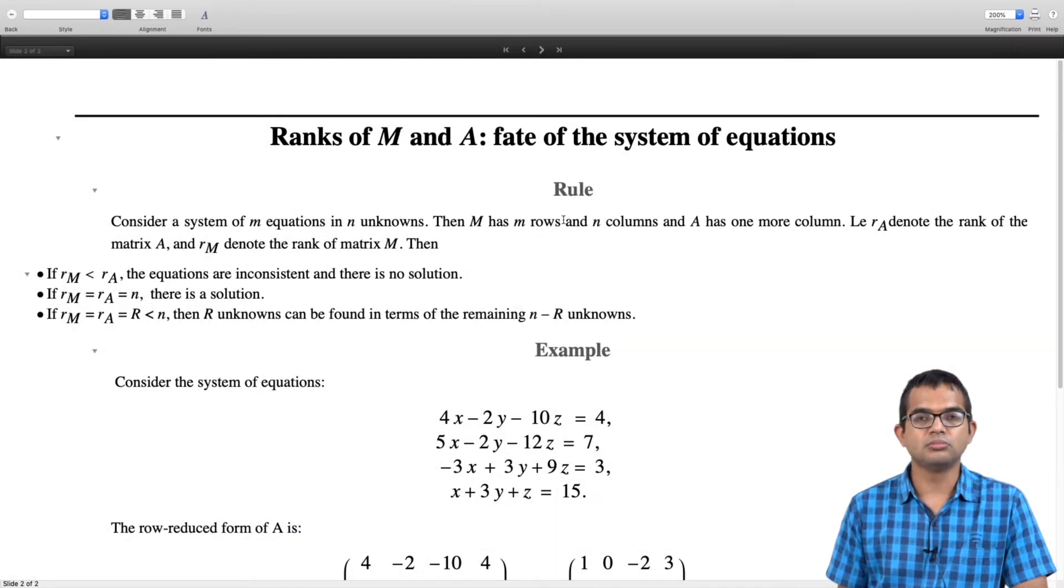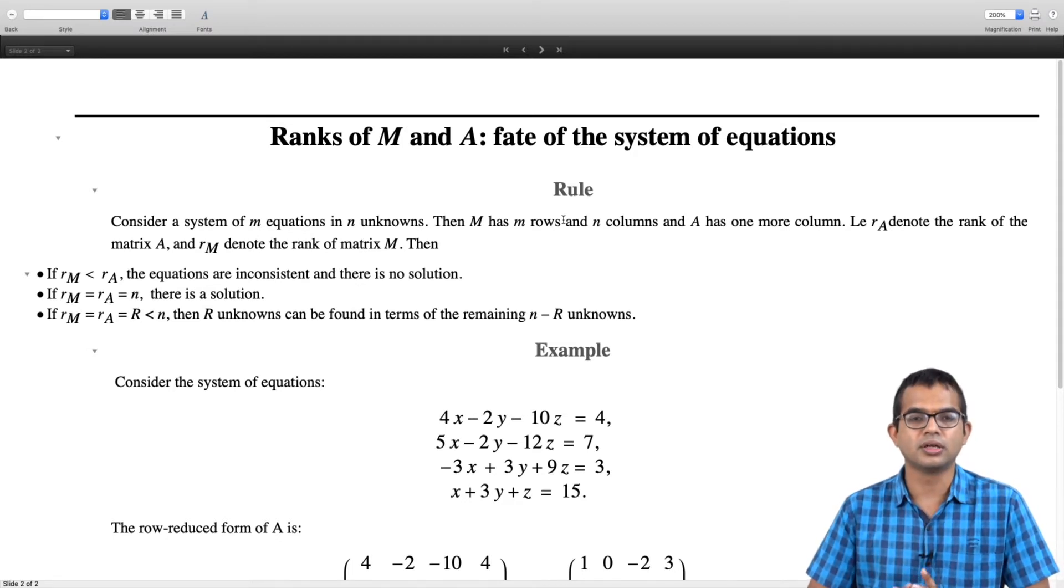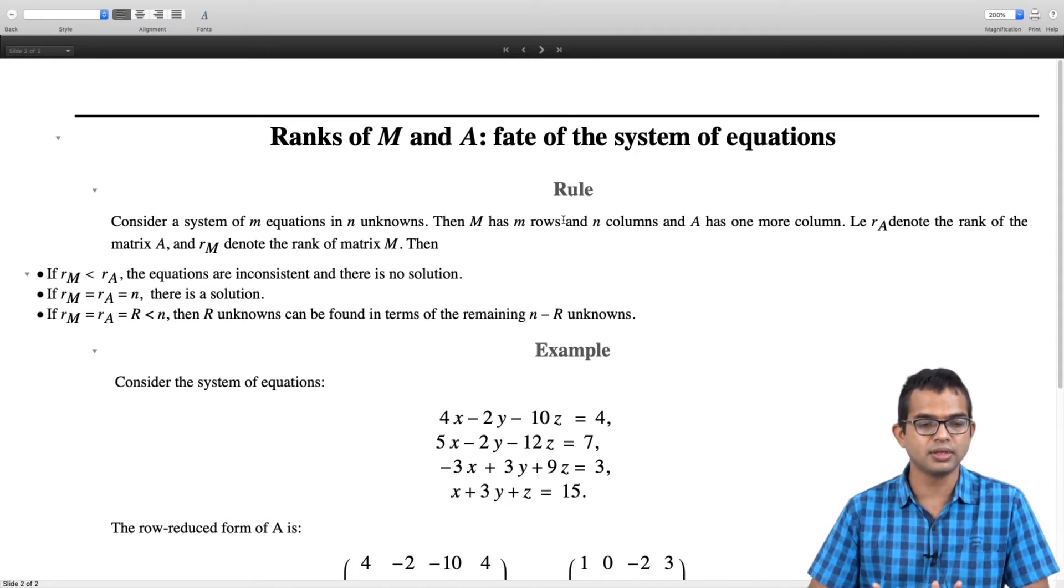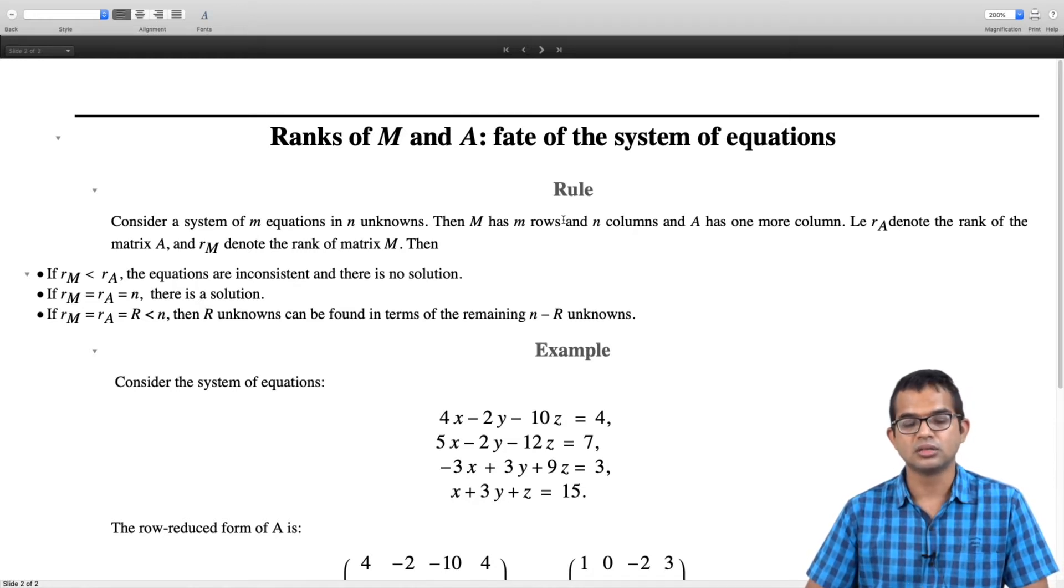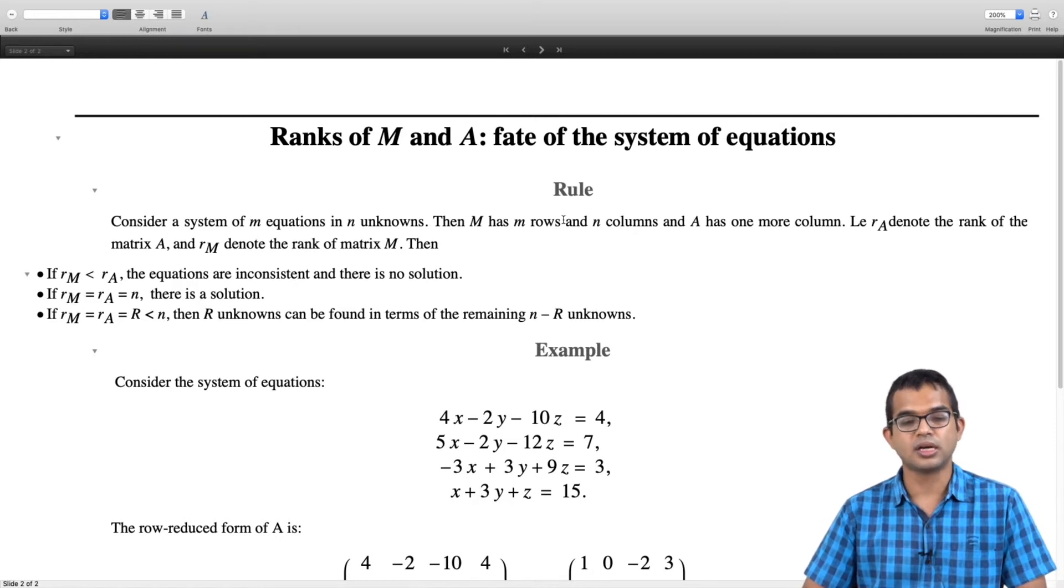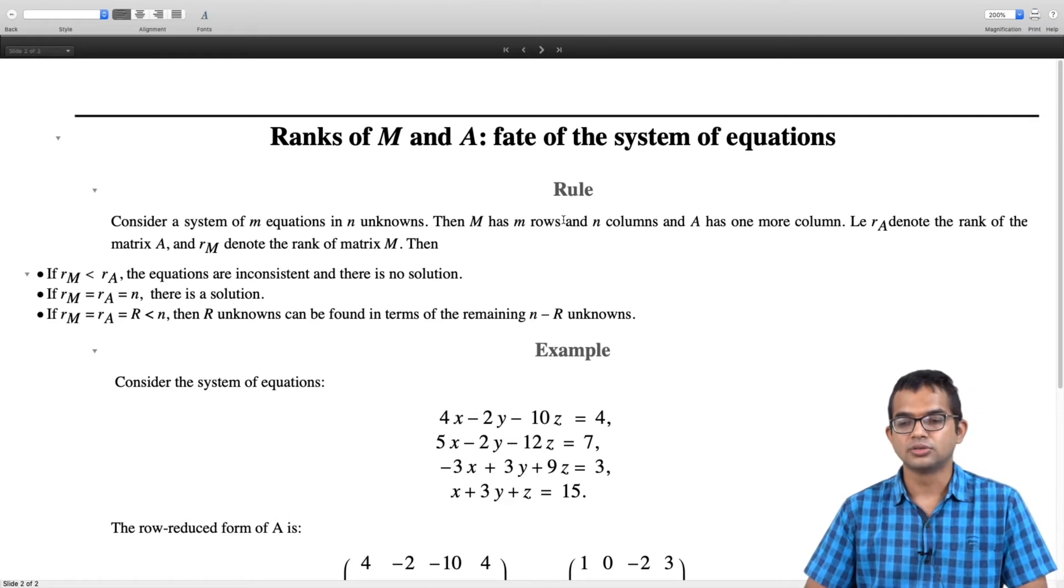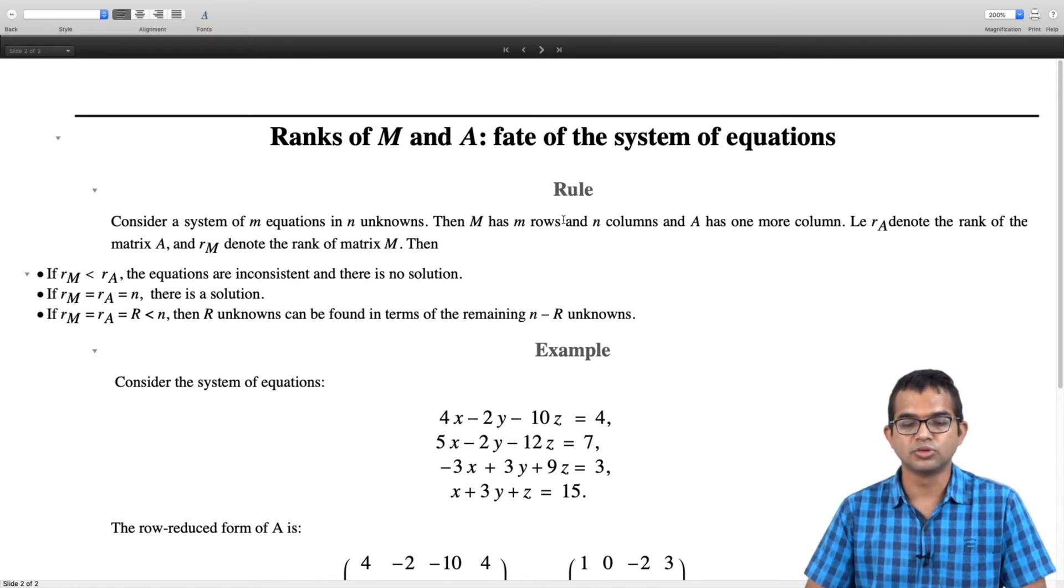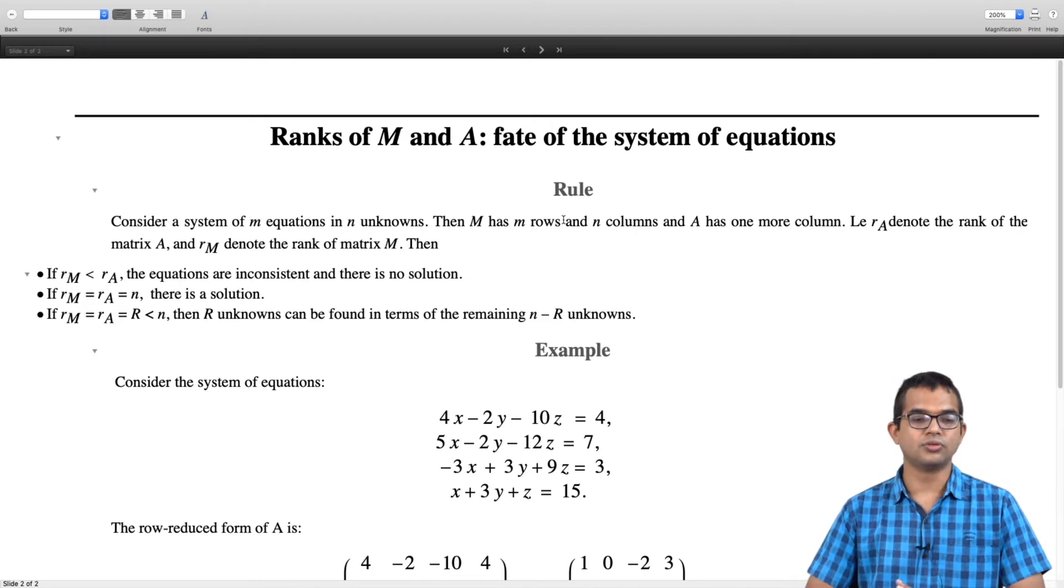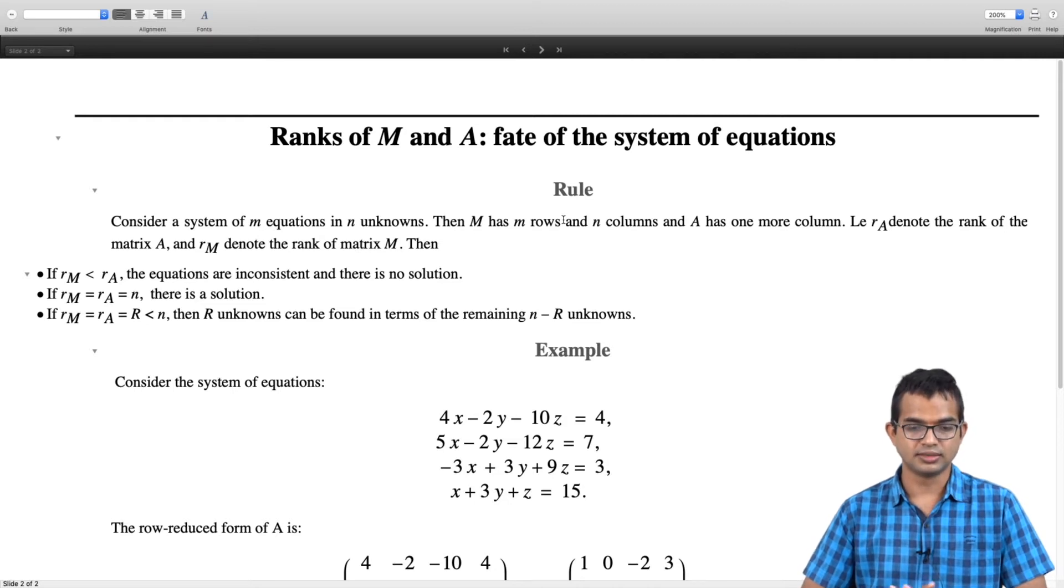Okay, so let us just give it out as a rule. So the rule is simply that if you have a system of m equations in n unknowns, so you have m rows and n columns. So you write down all the equations as different rows. And so A has one extra column. These are the numbers which appear on the rightmost end. So let rA denote the rank of matrix A and rM denote the rank of matrix M and then there are only three possibilities.